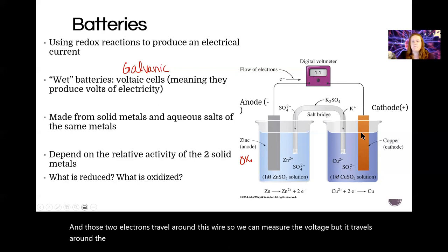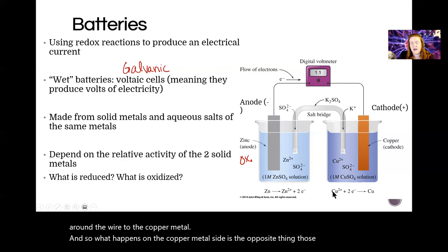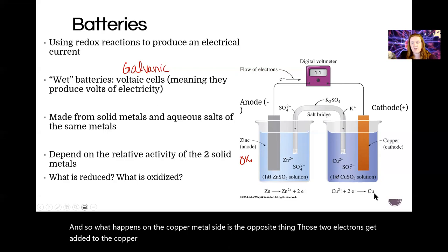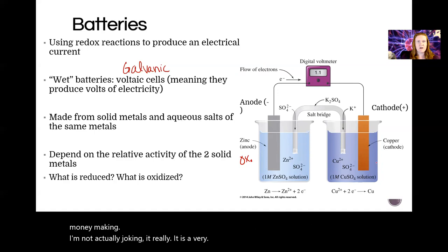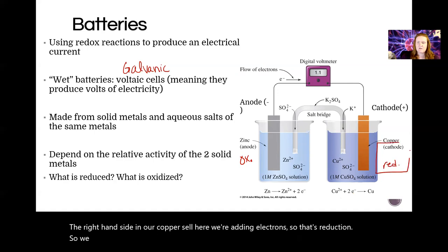Those two electrons travel around this wire so we can measure the voltage, but it travels around the wire to the copper metal. So what happens on the copper metal side is the opposite thing. Those two electrons get added to the copper ion to produce copper solid, which is great because zinc is cheap as all get out and copper is not. So here we're consuming zinc to make copper and it's magical money making. I'm not actually joking, it really is a very dollars wise efficient use of resources. What's happening on the right hand side in our copper cell here, we're adding electrons so that's reduction.